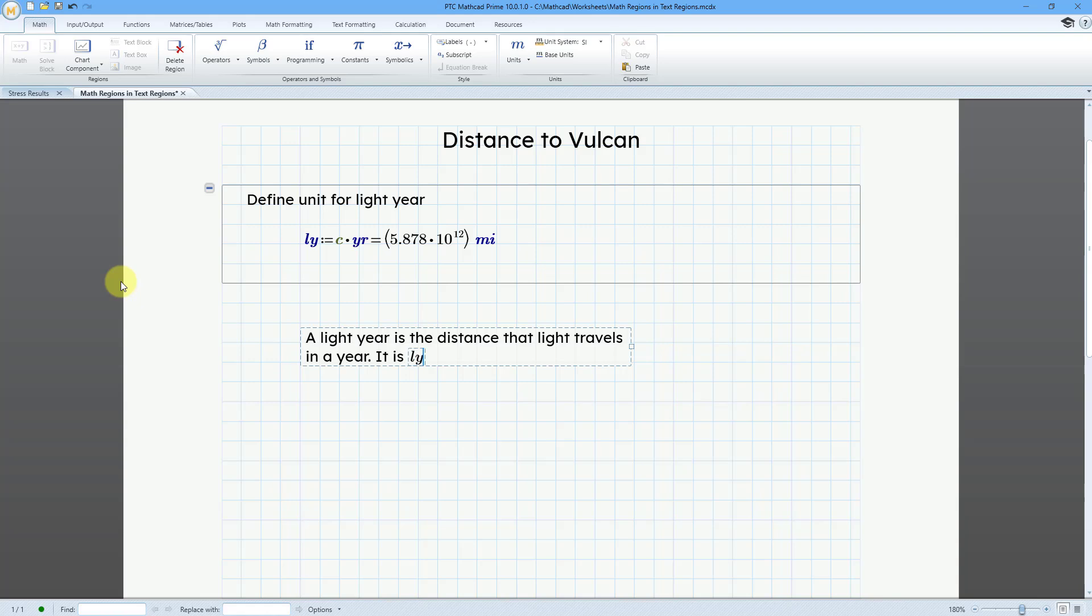Let me type in the name of the unit, LY, and then the equal sign. And here it gives me the distance. Since this is a regular math region, I can even change the units. Maybe I want this to be evaluated in kilometers instead. And then let me click on the outside.